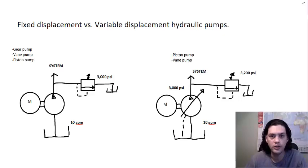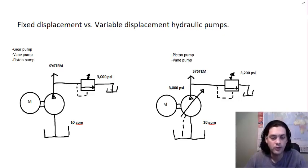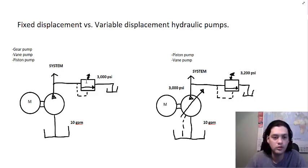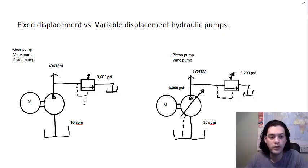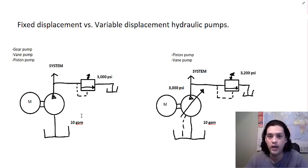When the relief valve opens, it dumps fluid back into the reservoir. This type of system is normally used in applications where you do not have long periods of running time, because any time you dump fluid under pressure through the relief valve, you're wasting horsepower — dumping 10 GPM at whatever maximum pressure you're working at.